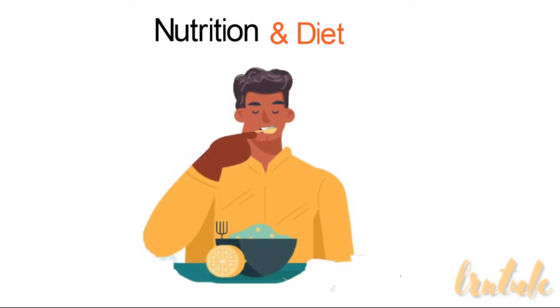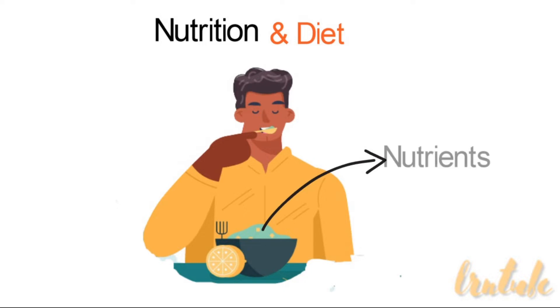In this lesson we're going to learn about nutrition, mainly the relation of nutrition to our food and diet. Nutrition is how your body gets nutrients from the food you eat, which it uses to perform various metabolic reactions. From this simple definition we can say that nutrients are gotten from food, or that food is a source of nutrients.